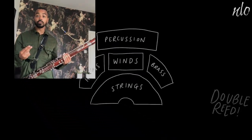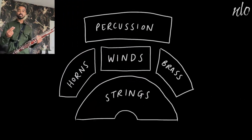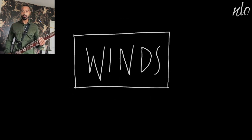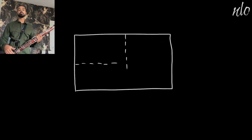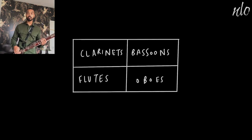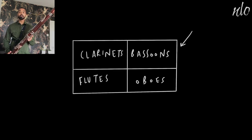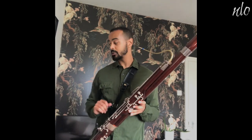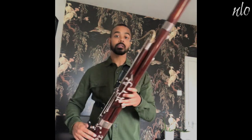In the orchestra, there are two bassoons and we sit just behind the oboes. But sometimes you might see a third bassoonist there playing contrabassoon. I'm going to play you the lowest notes of the bassoon and then the lowest notes of the contrabassoon, which I'll show you in a second for comparison.